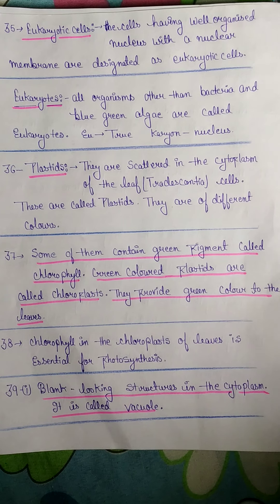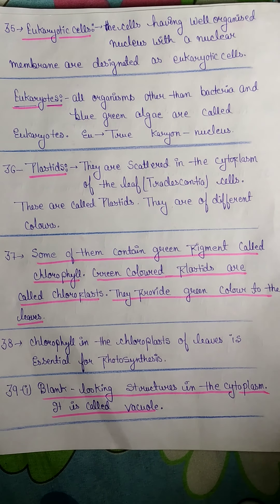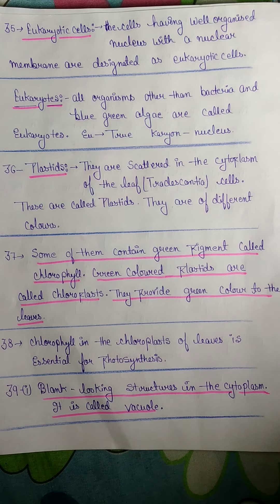Plastids are found in Tradescantia cells and are of different colors. Point 37: Some of them contain a green pigment called chlorophyll. Green-colored plastids are called chloroplasts; they provide green color to the leaves. Point 38: Chlorophyll in the chloroplasts of leaves is essential for photosynthesis.